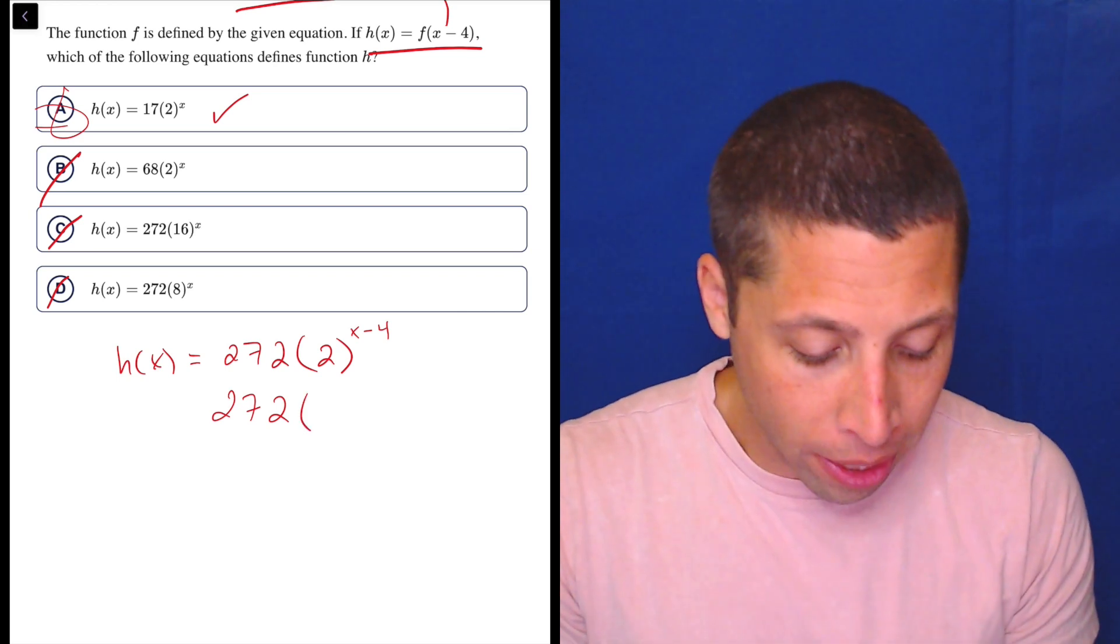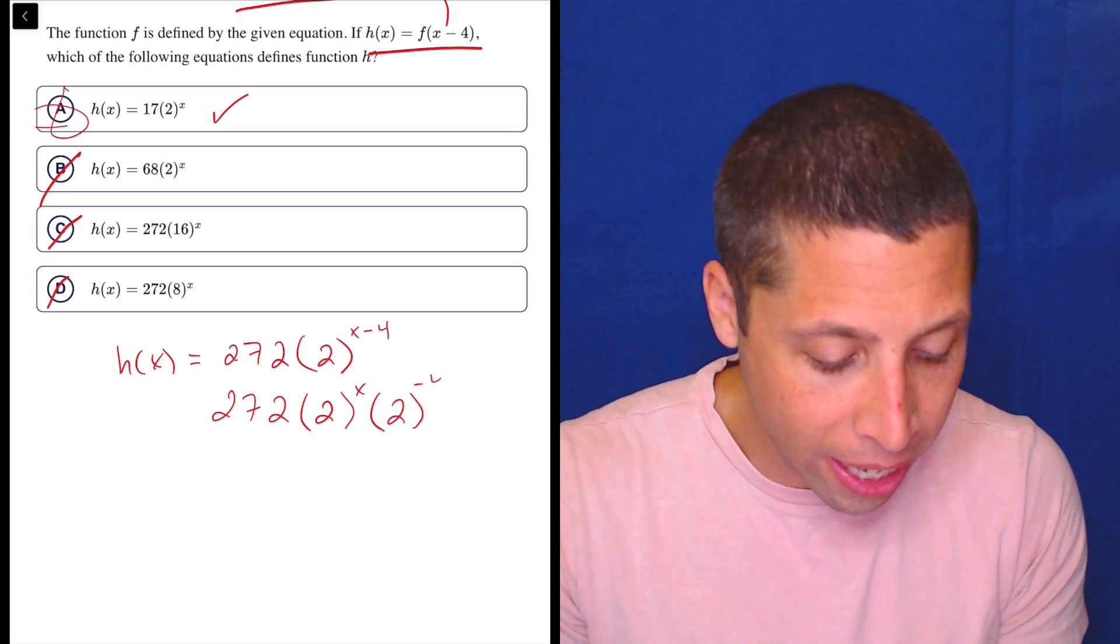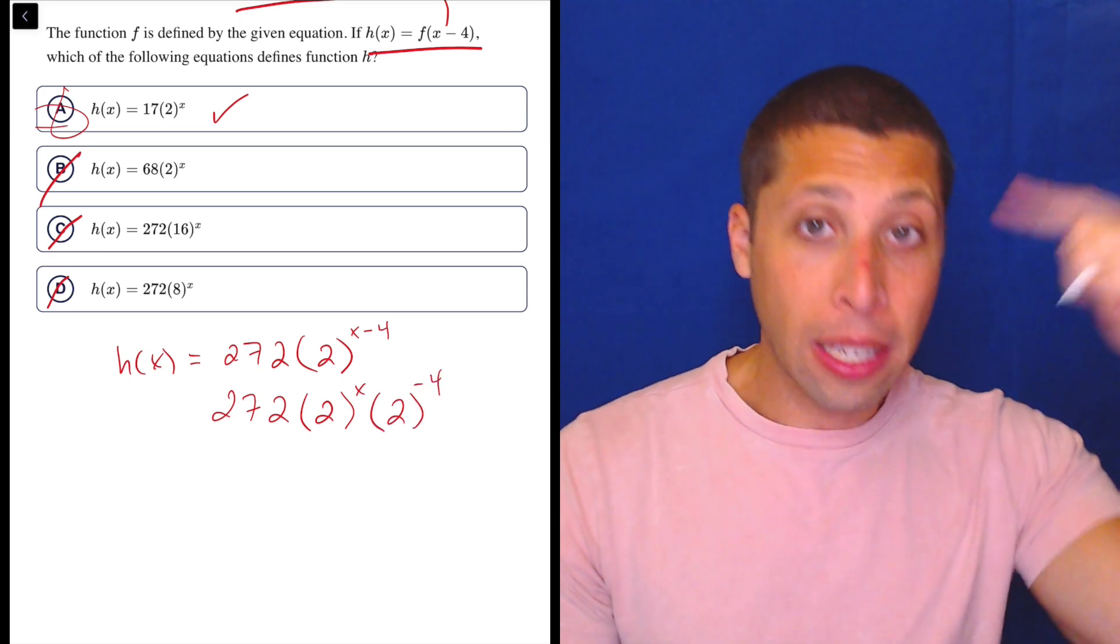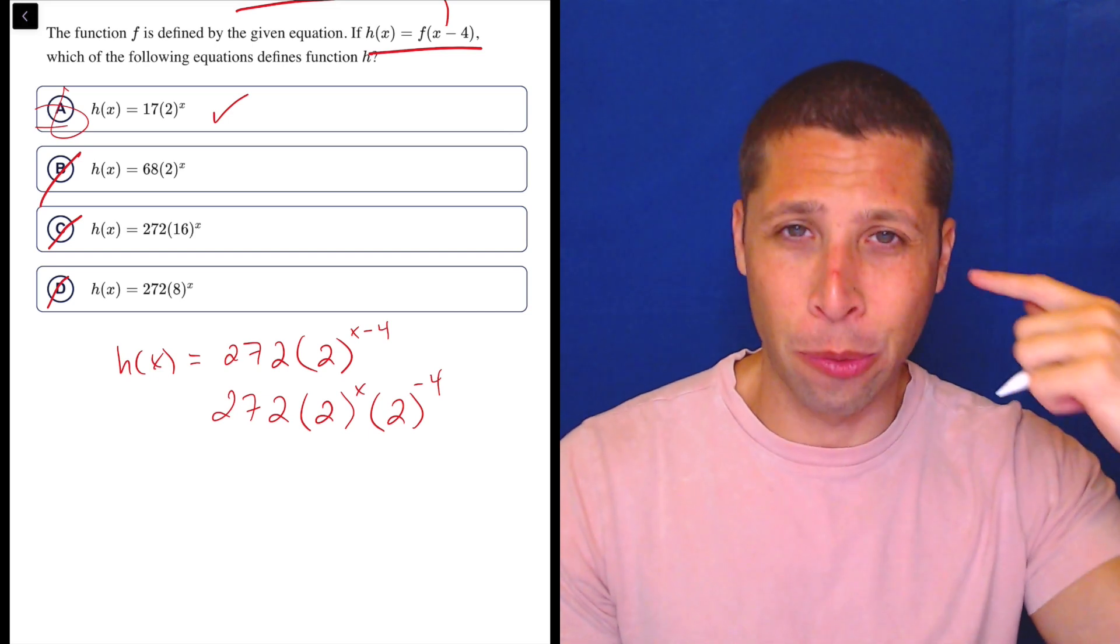So, what that means is I could break this thing up to 2 to the x times 2 to the negative 4. So, think it back, right? So, first of all, you've got to know the rule, but then also you've got to work it backwards, which is hard.